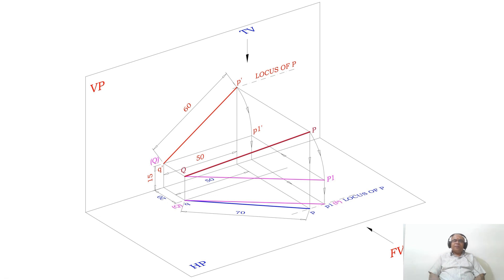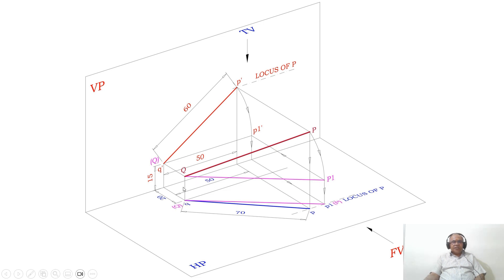Now I need to find the true length. To find the true length, you have the line in space that is QP. With Q as center, taking the radius of PQ, you draw an arc. This is because I want to find the true length in HP — the line has to be parallel to HP. Q is above HP by 15 mm, so with Q as center, taking the radius of PQ, you rotate P until P is above HP by 15 mm. That makes QP1 parallel to HP. You can see the line parallel to HP with Q above HP by 15 mm, and P1 should also be above HP by 15 mm.